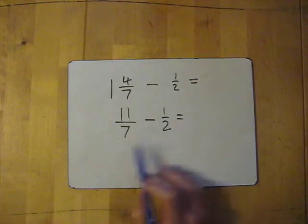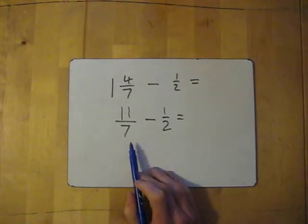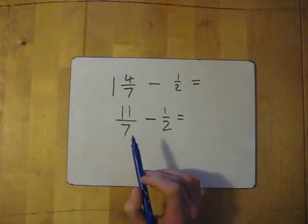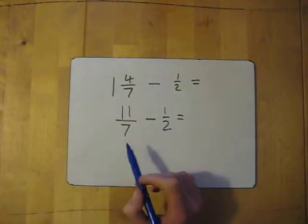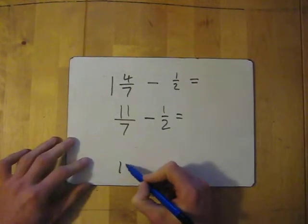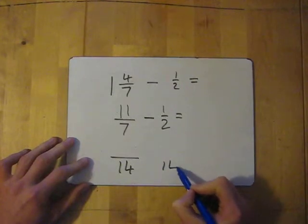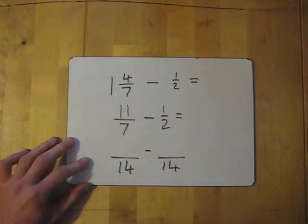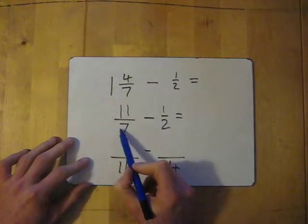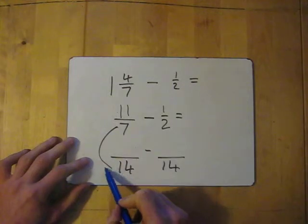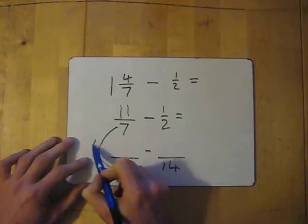Take away one half. Now we need the same denominator. The seven times tables, seven doesn't work obviously for two. Fourteen works for both. It's in the seven times tables and the two times tables. I'm going to change them both into fourteenths and then convert this. What have I done to seven to get to 14? I've times it by two.